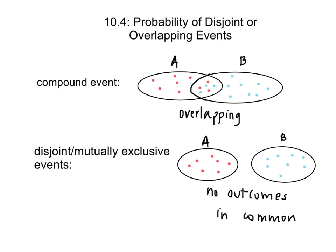Disjoint, or also called mutually exclusive events, are not overlapping and have no outcomes in common. Once again, overlapping events have outcomes in common, whereas disjoint events do not.